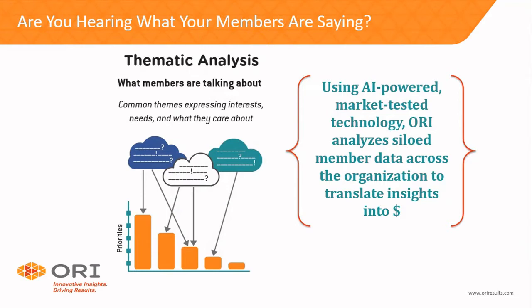The exciting part is being able to leverage AI-powered, market-tested technology to analyze data that is often siloed across the organization and inform association leadership's decision making. The thematic analysis in the middle is about understanding what members are talking about. People share feedback in lumps — rarely one concise thought. In a member feedback survey, someone might say, 'I really enjoyed last year's conference, but I'm finding your website clunky, and I'd like a new learning module on X, Y, and Z.' Those are three very distinct things, and the technology can parse them into individual buckets and examine the sentiment and emotion around each idea.